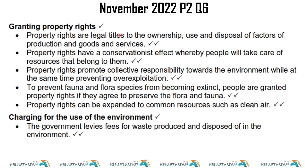For Question 6 measures on environmental sustainability: knowing that government can grant property rights earns one mark; explaining what that means earns two marks. Charging for the use of the environment: one mark for naming it, two marks for explaining. These headings earn you marks.